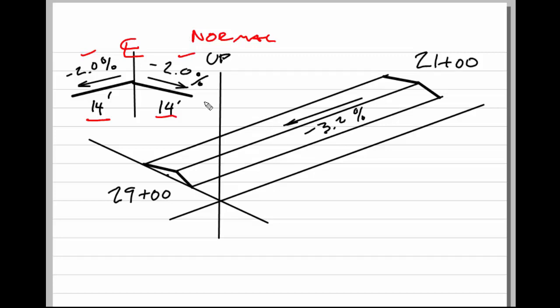I've also shown in this isometric view the pavement. Here you can see the cross section at both ends, and this piece of pavement runs from station 21+00 down to 29+00 measured along the center line, and the slope along that center line is negative 3.2%. Let's give this an elevation at 21+00 of 925.33 feet.